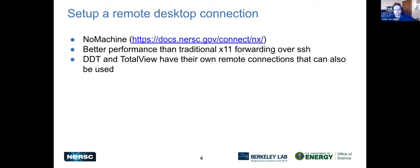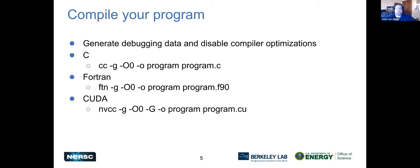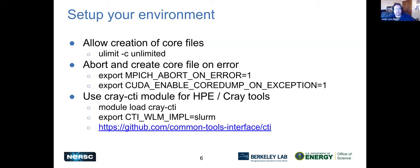A remote desktop connection is best with NX or NoMachine — it's faster than traditional X11 forwarding over SSH. Both DDT and TotalView have their own client you can install on your system, though sometimes that's not an option. When compiling for debugging, use the -g flag to include debugging symbols, and -O0 for zero optimizations. Set the ulimit for core files to unlimited so you can dump cores for use with GDB.